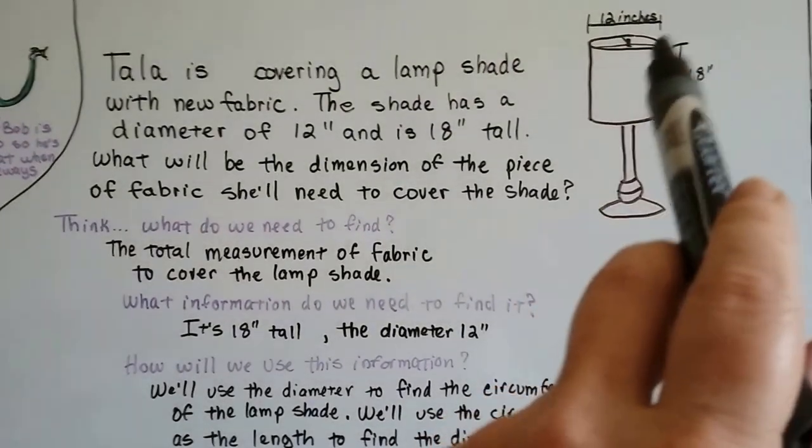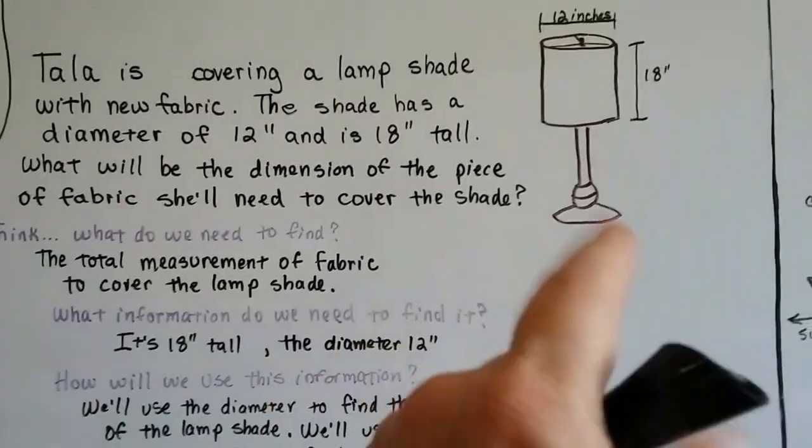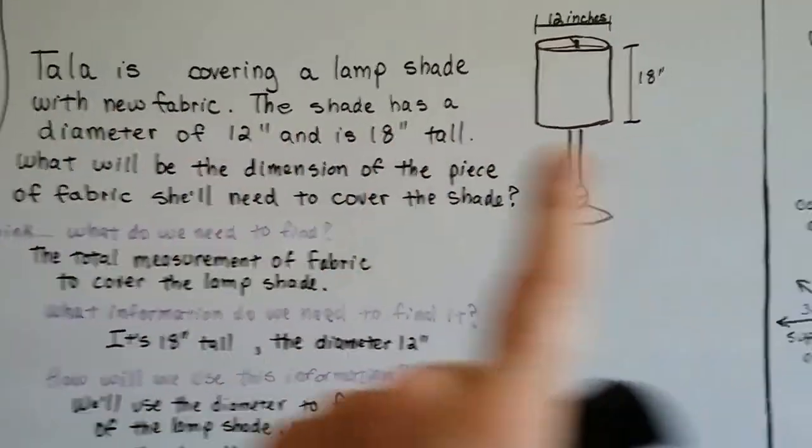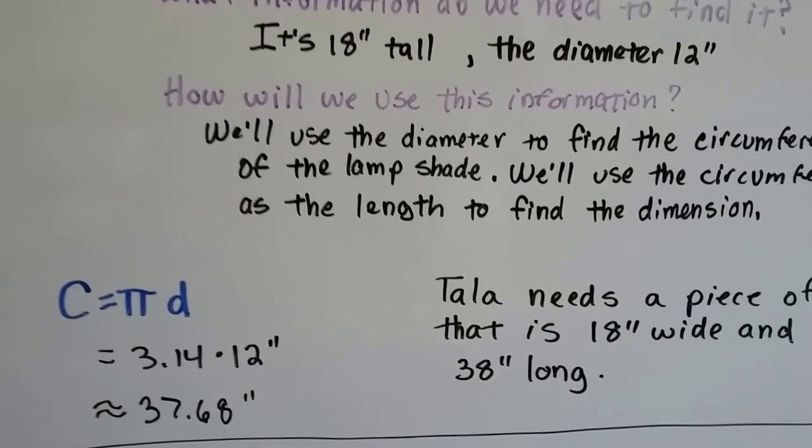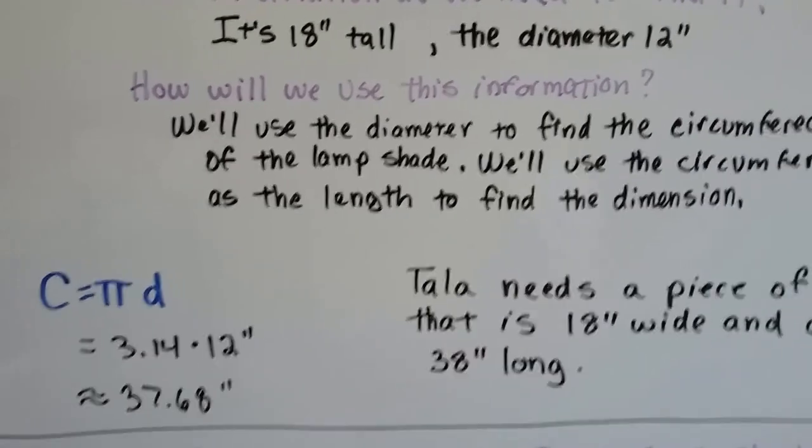Ah, because whatever this measures around, if this lampshade was open as a big long rectangle, the circumference would be the same as the length. See? So we're going to use circumference equals pi times d, pi times the diameter.